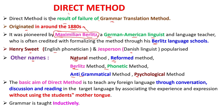The basic aim of the direct method is to teach any foreign language through conversation, discussion, and reading in the target language. All conversations, discussions, and reading will be done in the target language only. If you take the example of English, English will be learned only in English — we don't need to translate into the mother tongue, and we don't need to use the student's mother tongue or regional language.